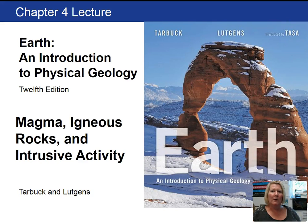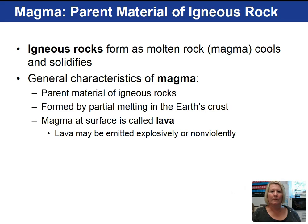Welcome back, everyone. This is the first lecture for Chapter 4, Magma, Igneous Rocks, and Intrusive Activity. Igneous rocks form from molten rock we call magma. When the magma cools and solidifies, it becomes an igneous rock.